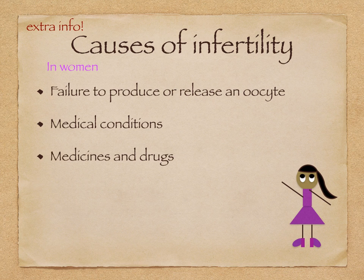Medicines and drugs — in fact, some cancer drugs may interfere with ovulation. And age: the fertility of women decreases during their mid-30s and continues to do so until menopause.